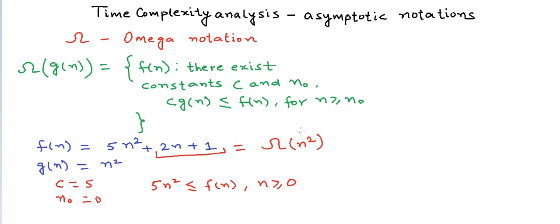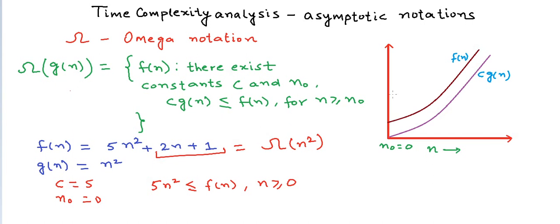Let us now plot this on a graph. The graph tells us that c·g(n) will never exceed f(n) for all n ≥ n₀. So Omega notation gives us the lower bound of the rate of growth of a function. In the context of time complexity analysis, this means we can say the time taken grows at least at the rate of growth of g(n).